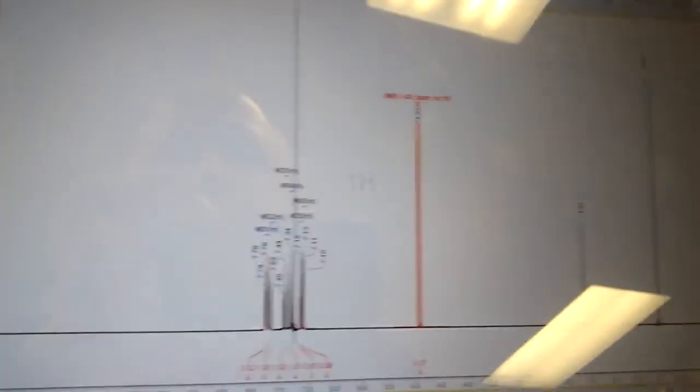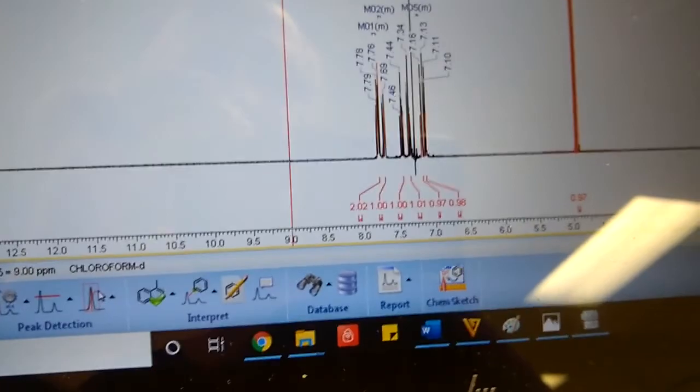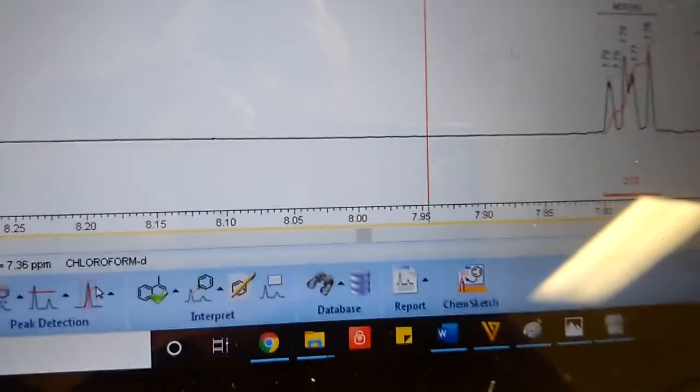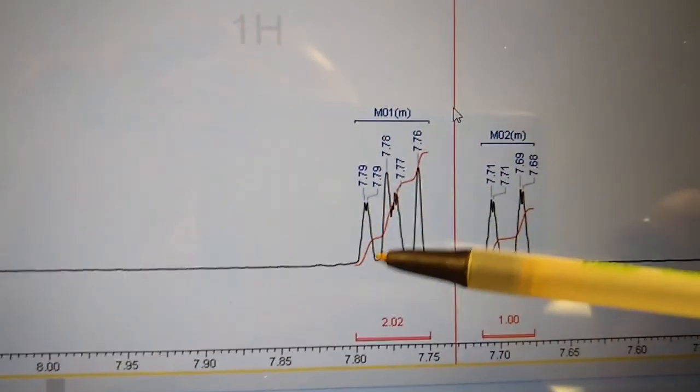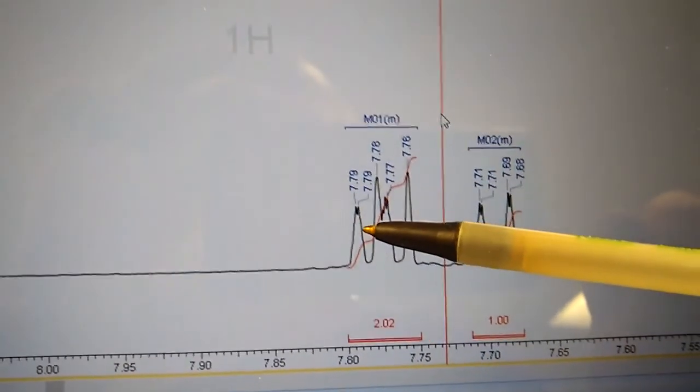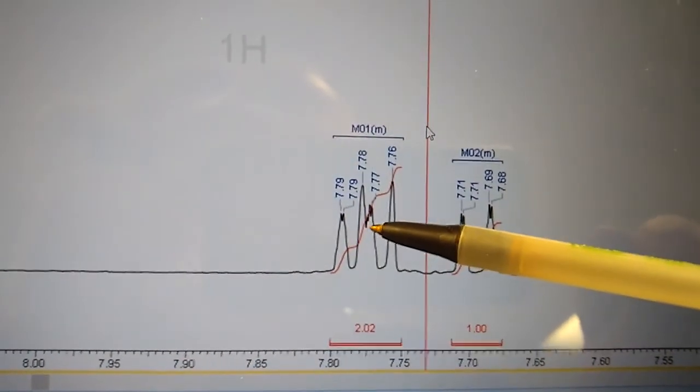Your OH signal would be that's just a singlet. And this signal right here, it looks like it's probably two doublets that are overlapping, so we can just call that a multiplet when it's not totally clear to you.